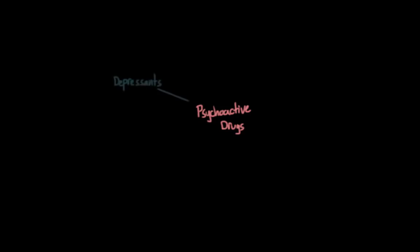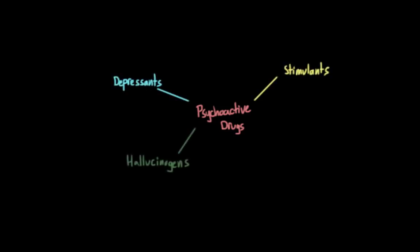Psychoactive drugs are drugs that can alter our consciousness. They can alter our perceptions, influence our moods, calm us down, make us feel more alert, etc. We classify psychoactive drugs based on the actions and effects that they have on our bodies. When we do this, we wind up with four main groups: depressants, stimulants, hallucinogens, and opiates.